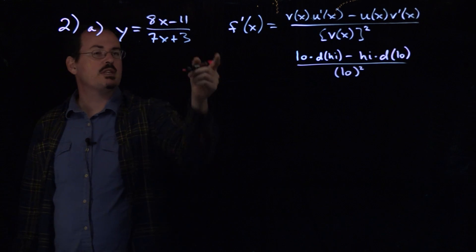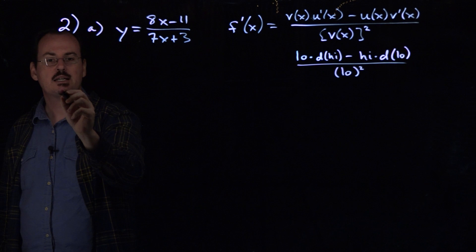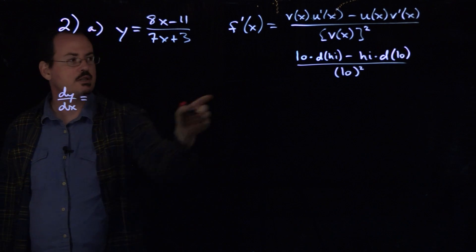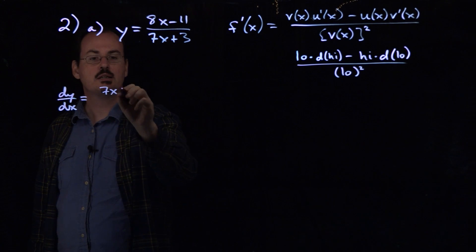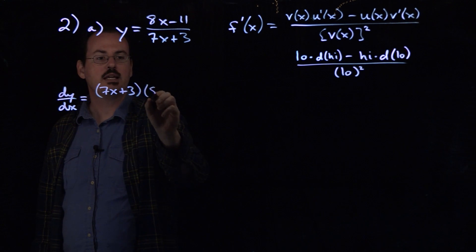So maybe with that in mind, we can say, let's see for part a here, dy dx. So if we remember, if we try to use that little memory aid, low d high: low, 7x plus 3, d high, the derivative of the top function, that's 8.